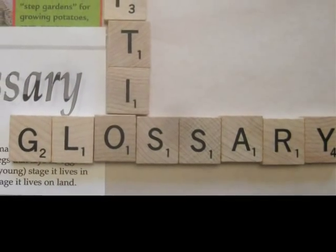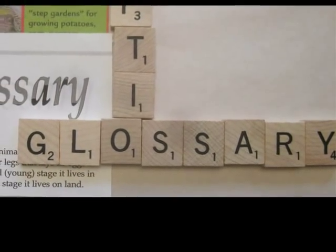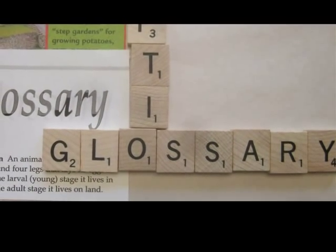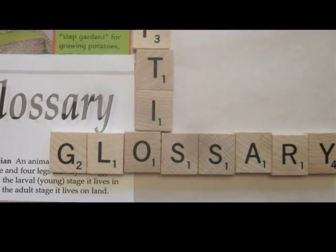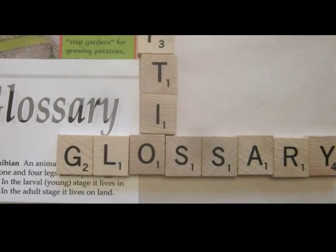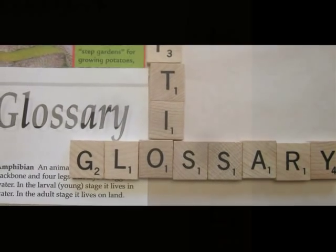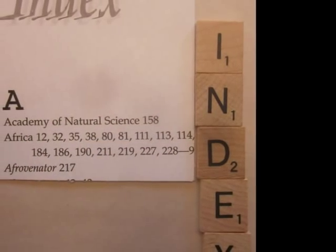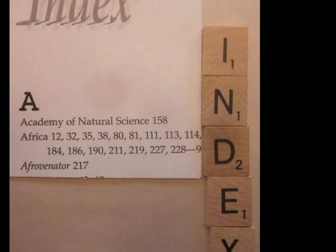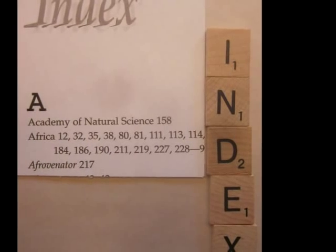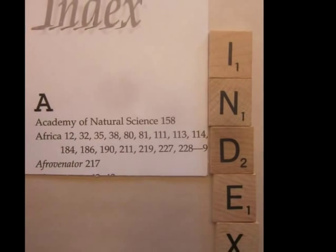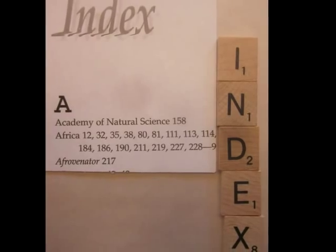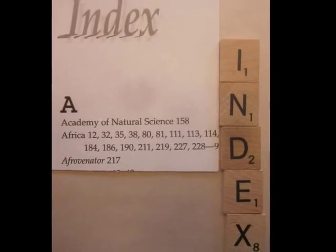A glossary is located at the back of a book, and it lists vocabulary definitions in alphabetical order. The index is also found in the back of a book, and it lists relevant topics covered in the text in alphabetical order.